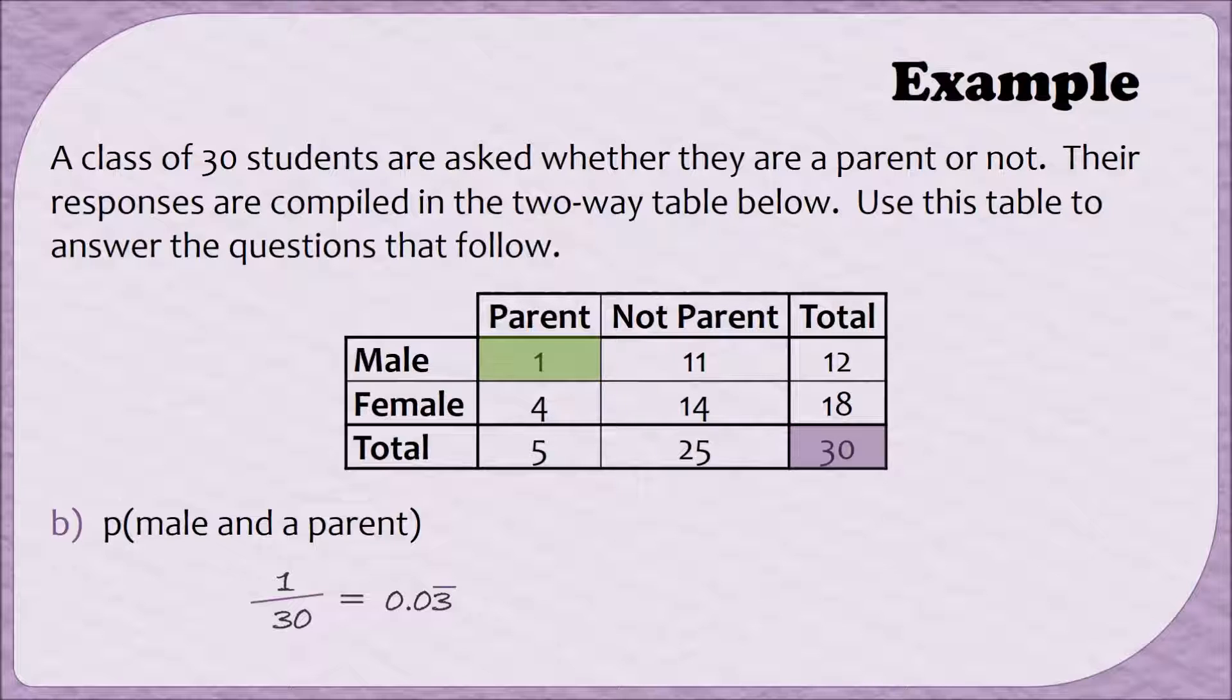Now, sometimes compound probabilities can be kind of hidden a little bit, and we're going to see that in this next example. Let's find the probability that a person is a mother. Now, our table does not include that word mother specifically, so we need to figure out what exactly is meant by mother. In this case, we're going to conclude that by mother, they mean this person is a female and this person is a parent.